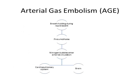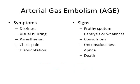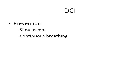Arterial gas embolism occurs as follows: during rapid ascent, if the diver is breath-holding, that results in a pneumothorax. That pneumothorax allows nitrogen bubbles to directly enter the arterial circulation, which can then travel to the brain or cardiopulmonary system. The symptoms and signs of arterial gas embolism mirror those of decompression sickness. Decompression illness is all about prevention — using a slow ascent and continuous breathing, or more specifically, not breath-holding while ascending.